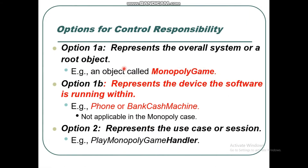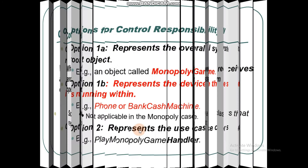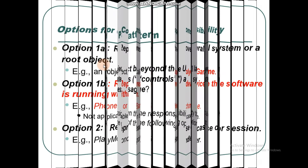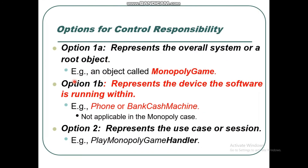Here are the options for control responsibility. Option 1a represents the overall system or a root object — the class which represents the overall system or root object. We give it the responsibility to receive and coordinate the system operation message. An example object is MonopolyGame. Option 1b — these are two parts of option 1: 1a and 1b.